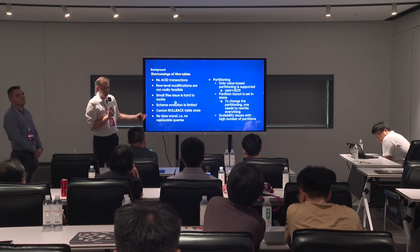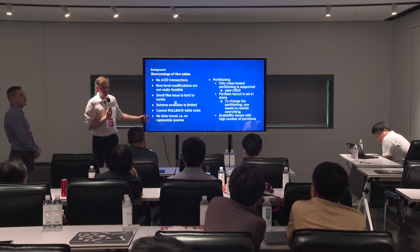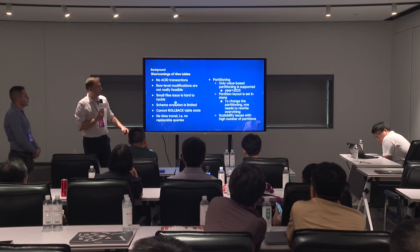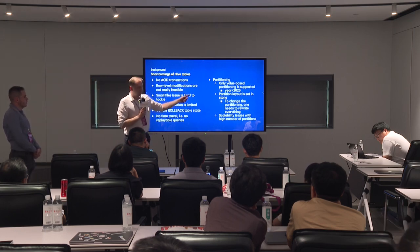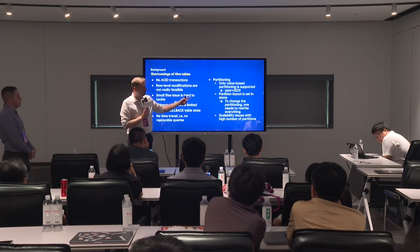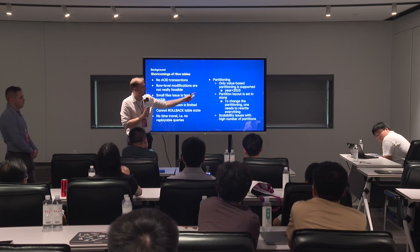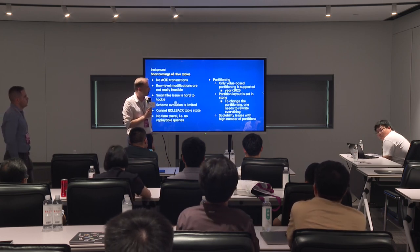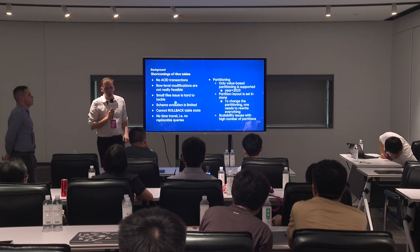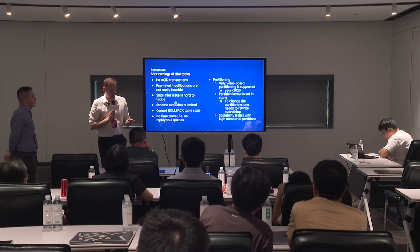Schema evolution — like adding or renaming columns — is very limited in Hive. You cannot roll back to earlier table states or use time travel because earlier states are not stored. Partitioning is also very simple, maybe too simple, and hard to change. Only value-based partitioning is possible, and if you want to change the partition layout you need to rewrite everything, since partitioning information is encoded in the directory and file structure.